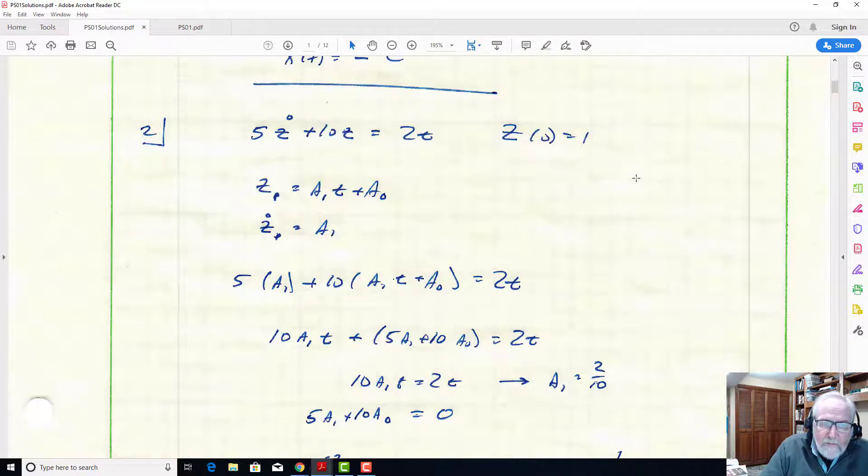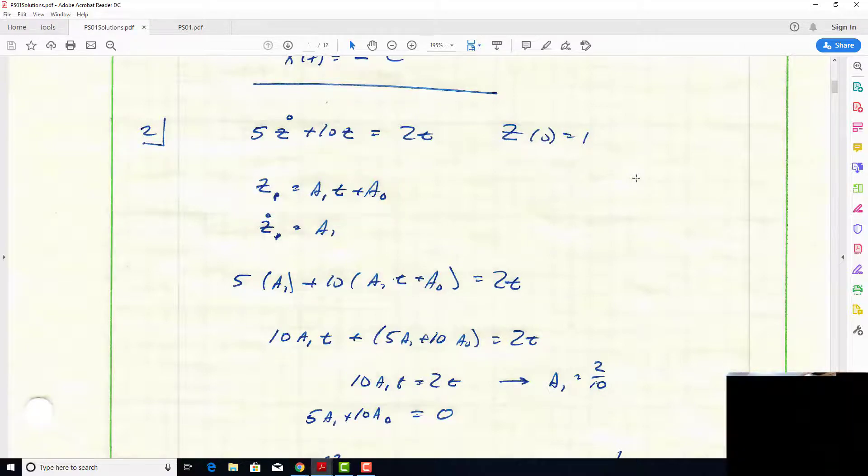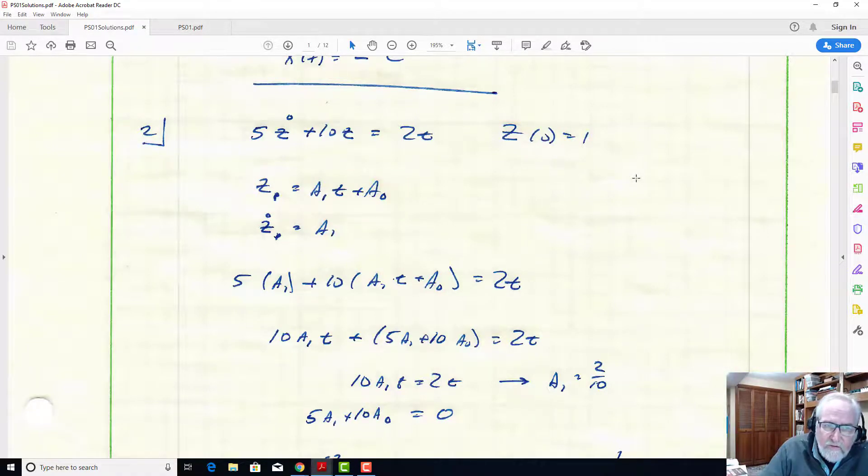So since this is a linear first-order polynomial, we only have two terms: a t term and a constant term. So the particular solution is of the form a1*t plus a0, and we're going to substitute that into the differential equation. We have to find its derivative, which is just a1.